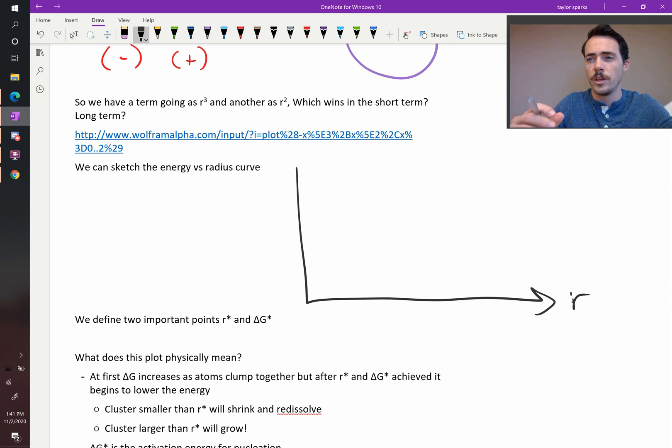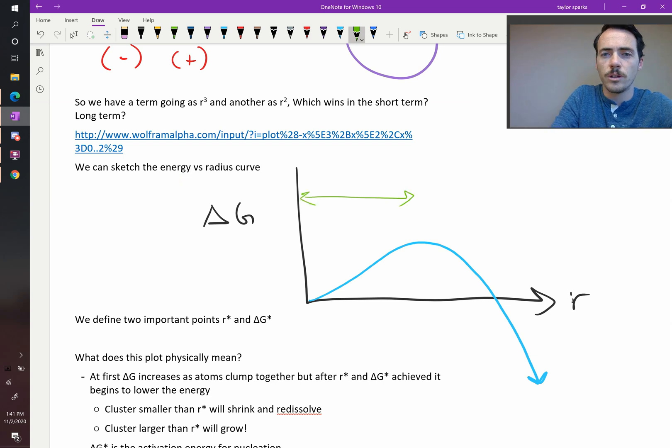So that allows us to sketch this change in energy as a function of the radius curve. So here's our radius of the new solid particle that's forming from the liquid phase. That's the size of our nucleus. Here is our energy, the change in the Gibbs free energy. Our curve is going to look something like this. It's going to rise at first and then it's going to fall. What this means is that while you are forming your particle, there is a region, a size region over here, where your particle at any given point, at any given snapshot, it is lowering its energy by dissolving. But above the peak of this hill and to the right of it, it will lower its free energy by growing.